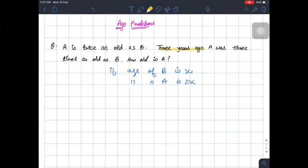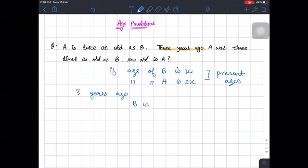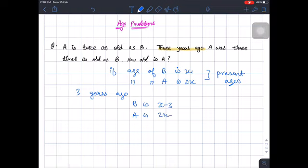Now three years ago, these are present ages. Three years ago B is x minus 3 and A is 2x minus 3, subtraction of 3 from the present ages.